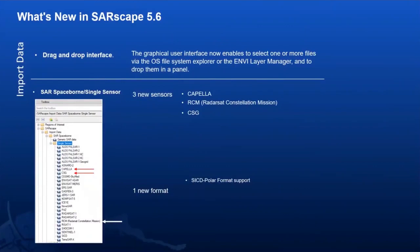What's new in SARscape 5.6 — the latest version. Key new sensors have been added: CAPELLA, RCM, and CSG. Also, a new SICD polar format support has been added to ENVI 5.6. The CAPELLA Space data provided to our partners L3Harris and SARMAP is now supported. It's very high-resolution data with a revisiting time of 3 to 6 hours once the satellites are in orbit, and it's directly supported in ENVI SARscape 5.6.